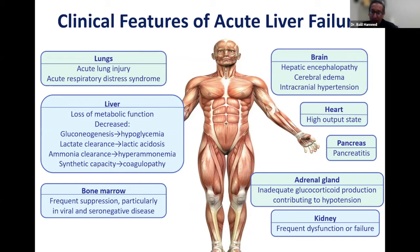About 30 to 40% of patients with acute liver failure can have pancreatitis for unclear reasons. They can have adrenal insufficiency, and especially with acetaminophen overdose, about 70% of patients can have acute kidney injury or kidney failure as well.